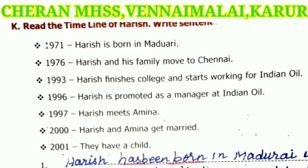Next, present perfect tense. Read the timeline of Harish and write sentences using the present perfect tense. Present perfect tense describes an action just completed. The formula is: subject + have/has + V3, where V3 means past participle.